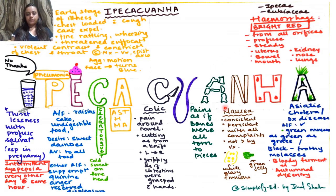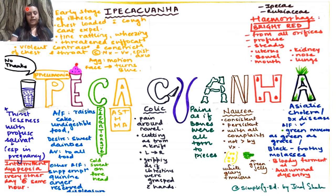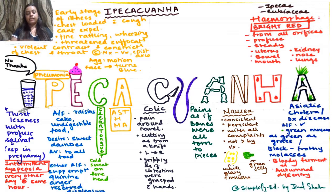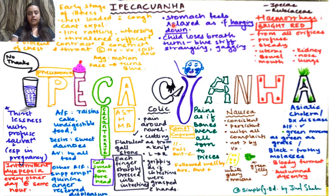The next A — drawn like bones — represents the symptom: pains as if the bones were all torn to pieces. This is an important and often overlooked symptom of Ipecac — the bone pain sensation as if they were torn to pieces.